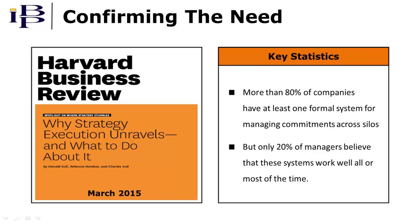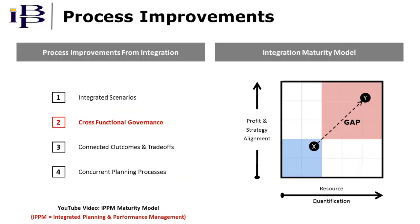These capability gaps were the focus of the article shown on the screen. It confirms that the absence of effective cross-functional coordination and governance is one of the primary factors that undermine strategy and business performance. This video provided a brief overview of cross-functional governance.